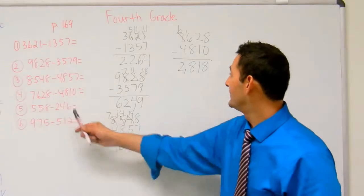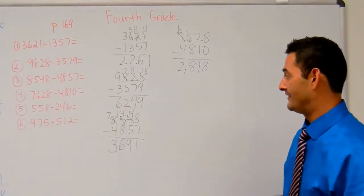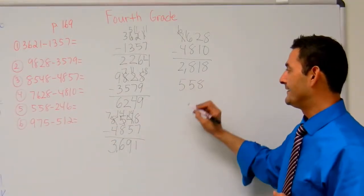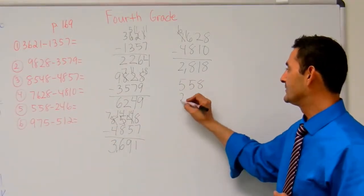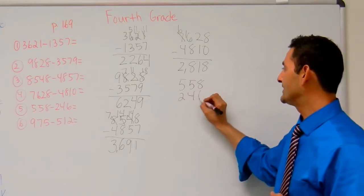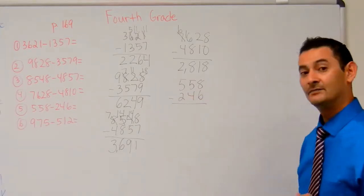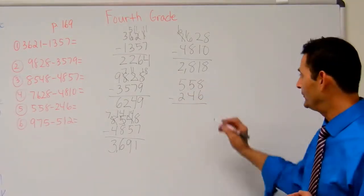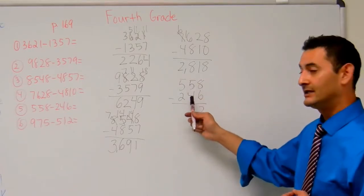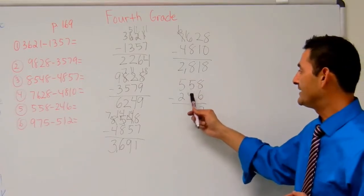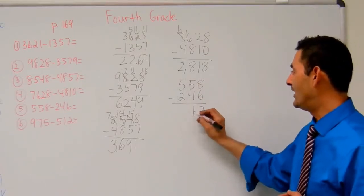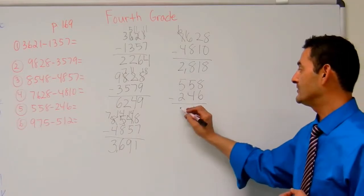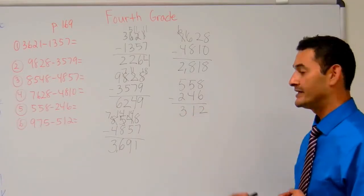Let's go ahead and do number 5. Number 5 is 558 minus 246. Let's look at the 1's place: 8 minus 6 — that's 2. 10's place: 5 minus 4 — that's 1. 100's place: 5 minus 2 is 3. The answer is 312.